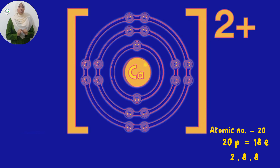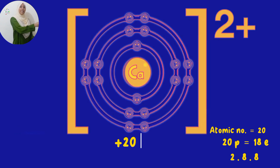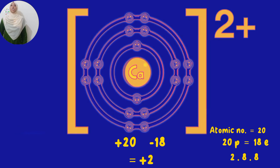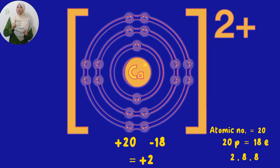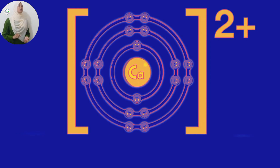The number of electrons present in the calcium ion is going to be 18. The number of protons is still at 20. So we have plus 20 minus 18, giving an overall charge of plus 2. Whenever you see an ion with a positive charge of 2, it simply means that ion has lost 2 electrons. Overall it's positively charged because there are more protons than electrons.